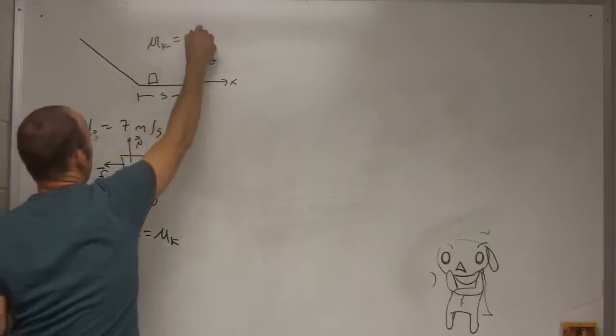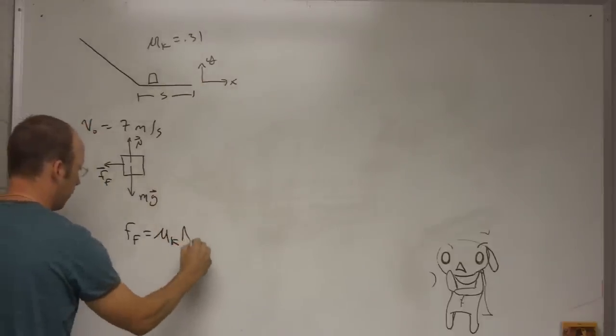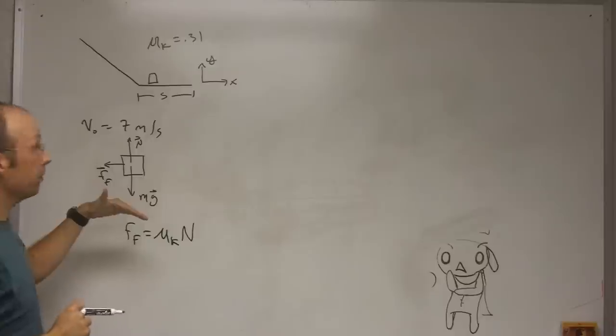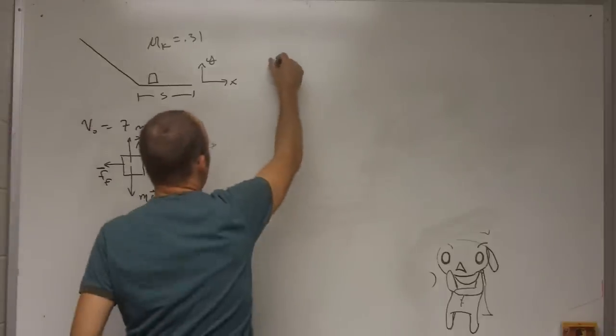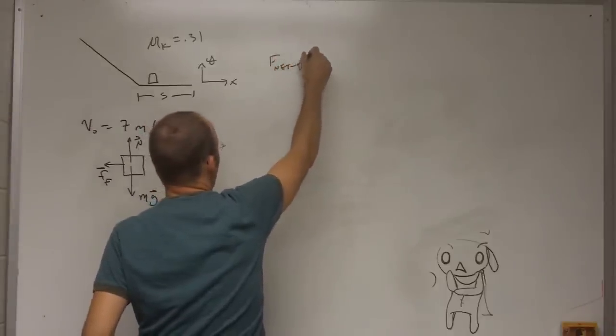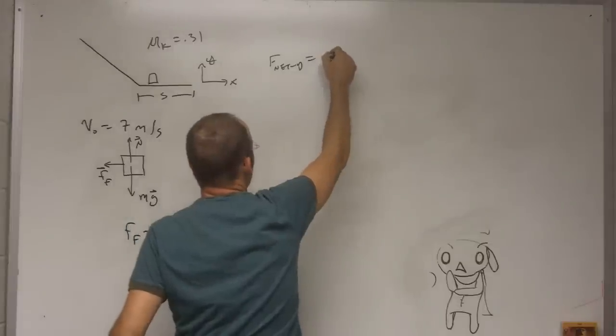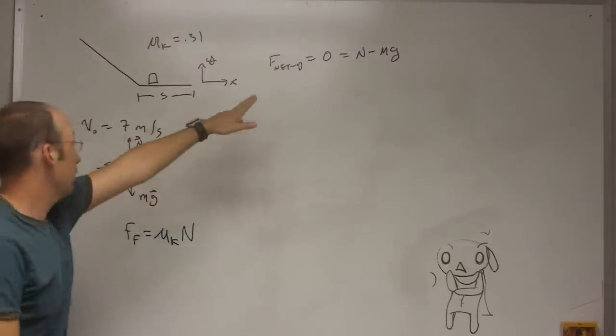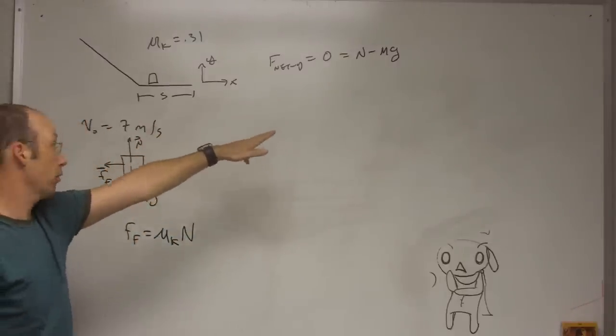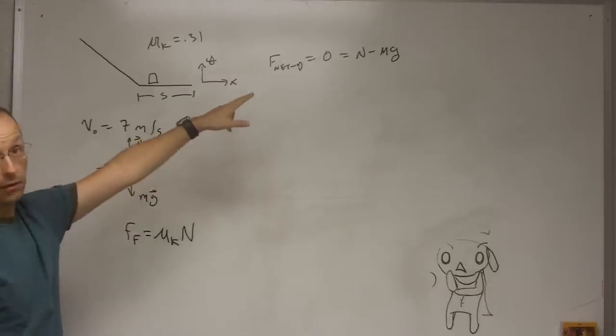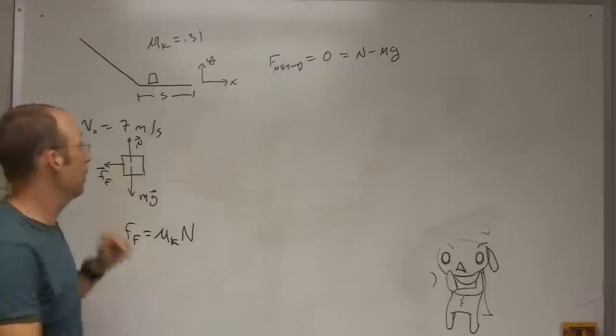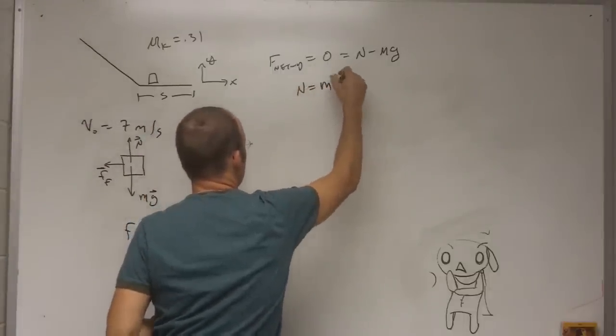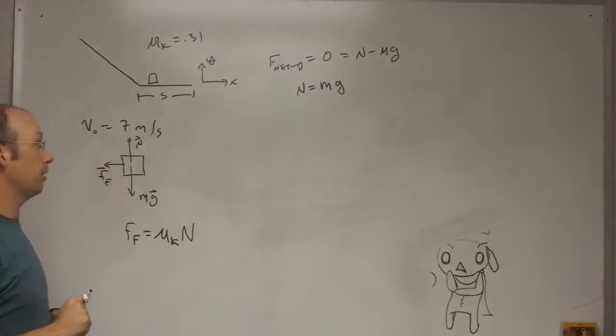So in the vertical direction and the y direction, there's no acceleration. So Fnet y equals 0 is n minus mg. So in that case, now these are the y components of the forces. That's why there's a negative sign on the minus mg. And so here you can see that n does equal mg. So that's a little bit different.